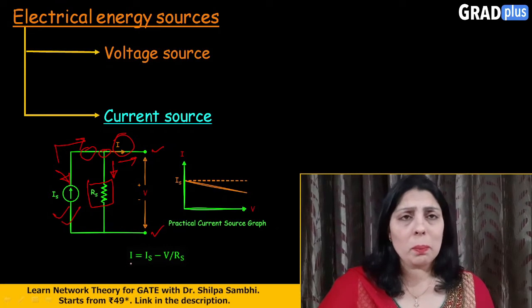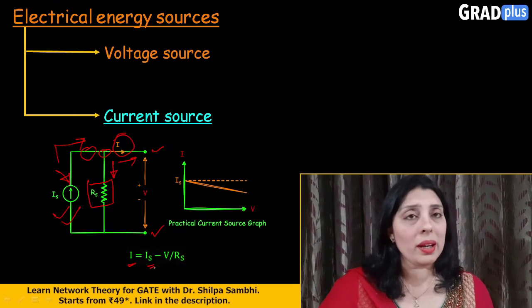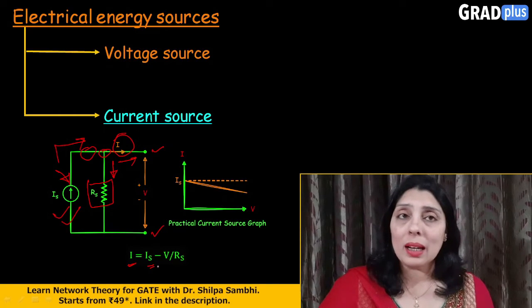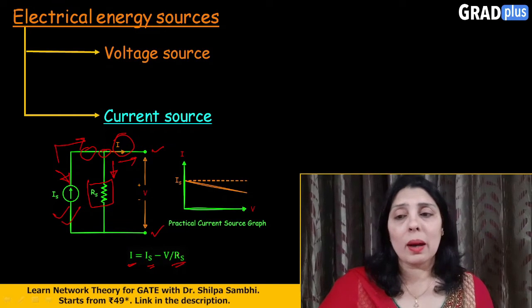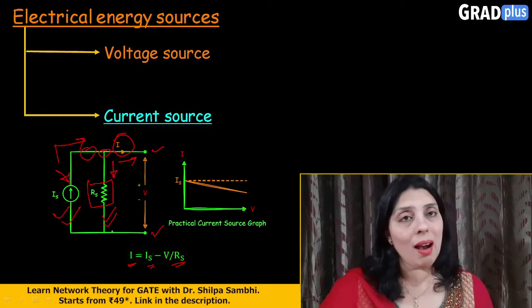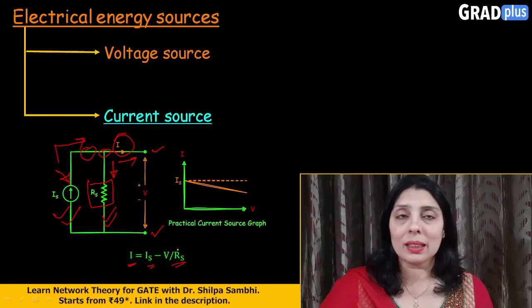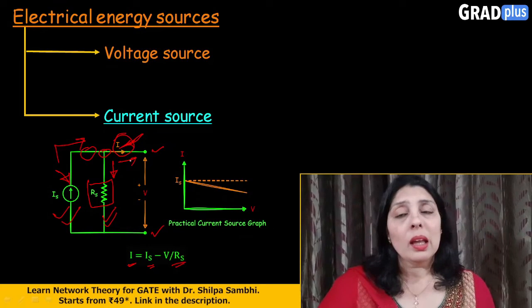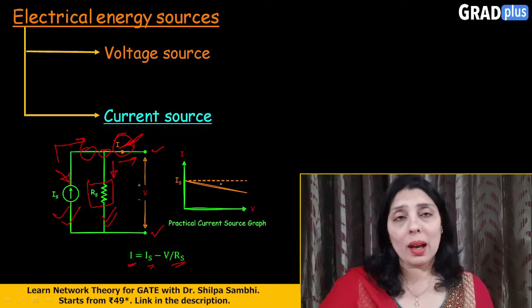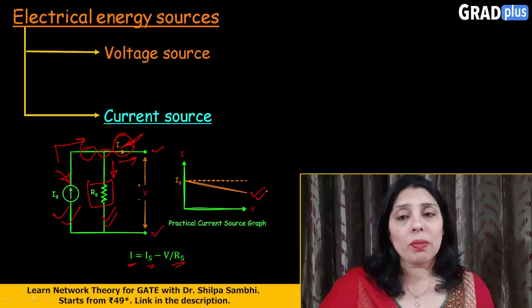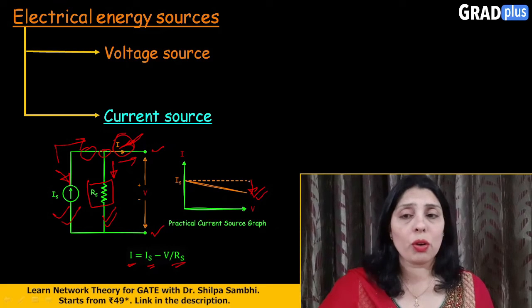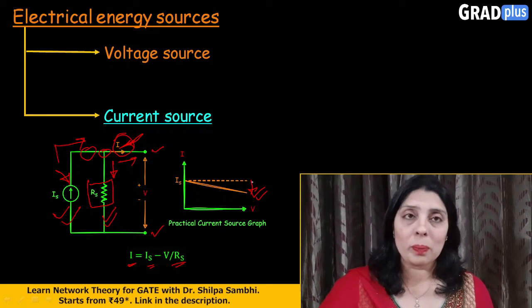So, if you just simply apply KCL here, this current I will be equal to the current provided by the current source minus the current taken up by this resistance Rs. So, Is minus V/Rs will be the final value of this current I. Now, if we just look into the VI characteristics of this particular current source here, what you will find that the actual value will slightly deviate from the ideal value.